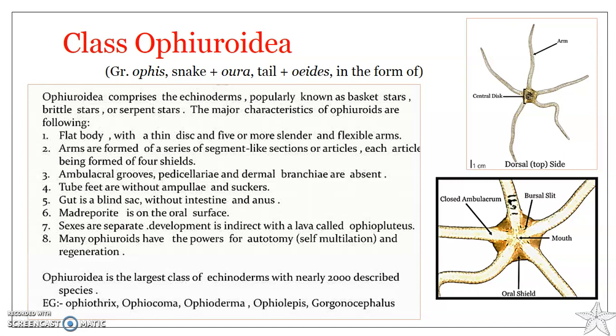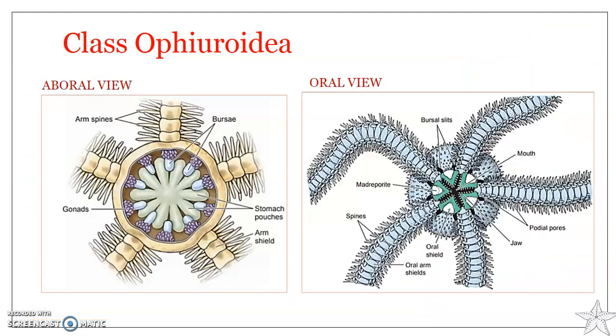Basket stars are suspension feeders. They wave their arms and trap plankton on mucus-covered tube feet, and the trapped plankton is passed from tube foot to tube foot along the length of the arm until it reaches the mouth. It is interesting to watch how they transfer food from one tube foot to the other until it reaches the mouth.